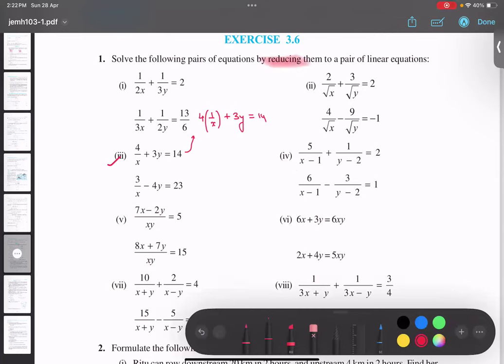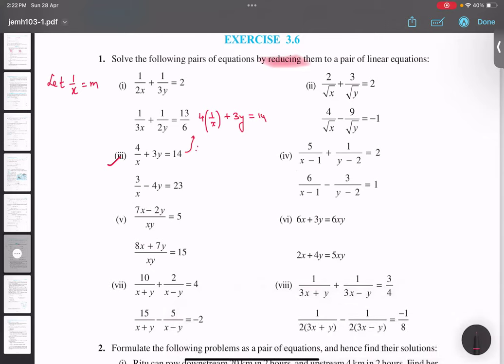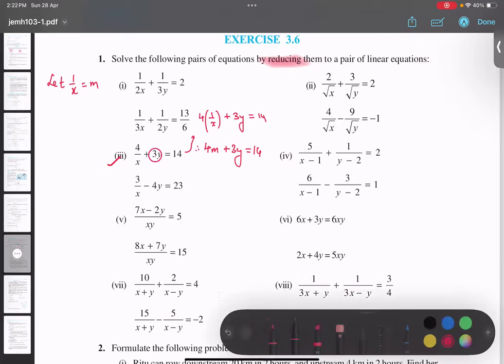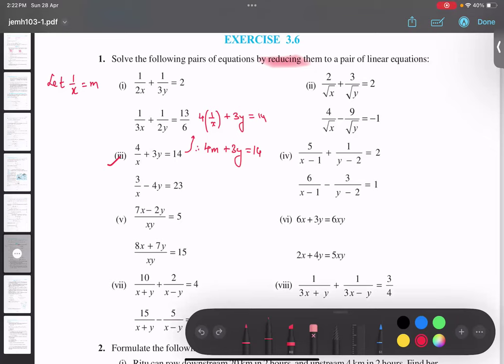So, what do we will do for y? Y equals 1 upon y. Yes. Y equals to y. Therefore, my equation becomes 4m plus 3y equals to 14. Yes, understood? Because this y is in numerator only. Yes. So, no need to change this one. So, similarly, this becomes my first equation. This will become my 3m minus 4y equals to 23. Yes. This becomes my second equation.